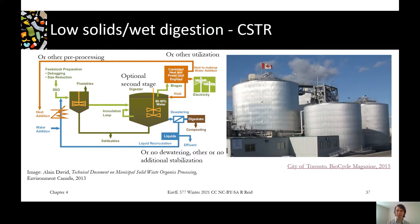On the right is a picture of a CSTR. This is the City of Toronto's Disco Road facility and you can see the large vertical reactors — pretty efficient on space, being able to put those big vertical tanks in.